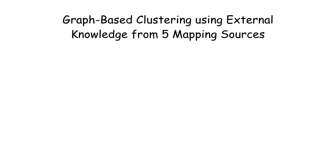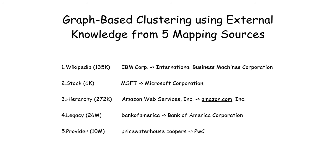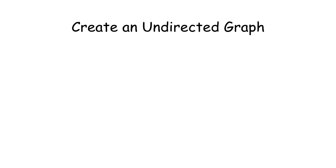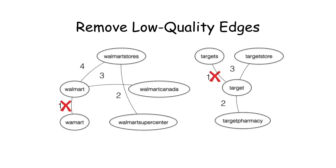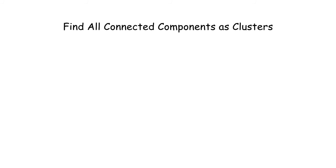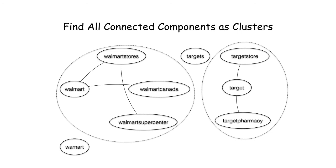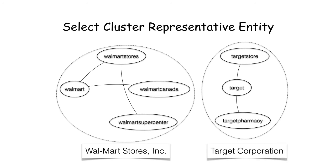To cluster the entities in the knowledge base, we perform an efficient graph-based clustering based on external knowledge from five data sources. Each data source contains a set of mappings from surface forms to normalized forms. We first create an undirected graph from the mappings. Each mapping is converted into an edge, and the weight of the edge is the number of sources containing the mapping. We then filter out low-quality edges that only appear in a single mapping source. Based on this graph, we apply transitive closure to find all the connected components in it, where each connected component corresponds to a cluster. Finally, we choose the most appropriate entity to represent each cluster based on entity popularity.